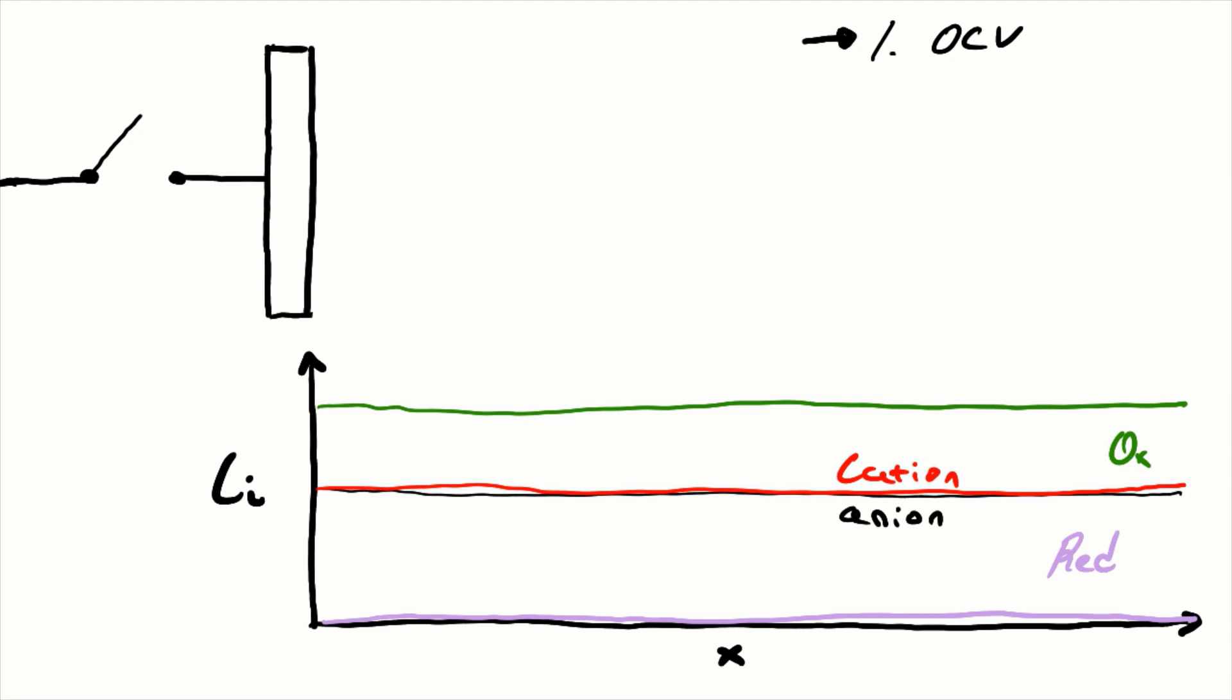Before we get into the weeds of EIS analysis, let's establish what's happening in the cell. If we turned on the battery with the DC current, we might imagine the following happens in this order.